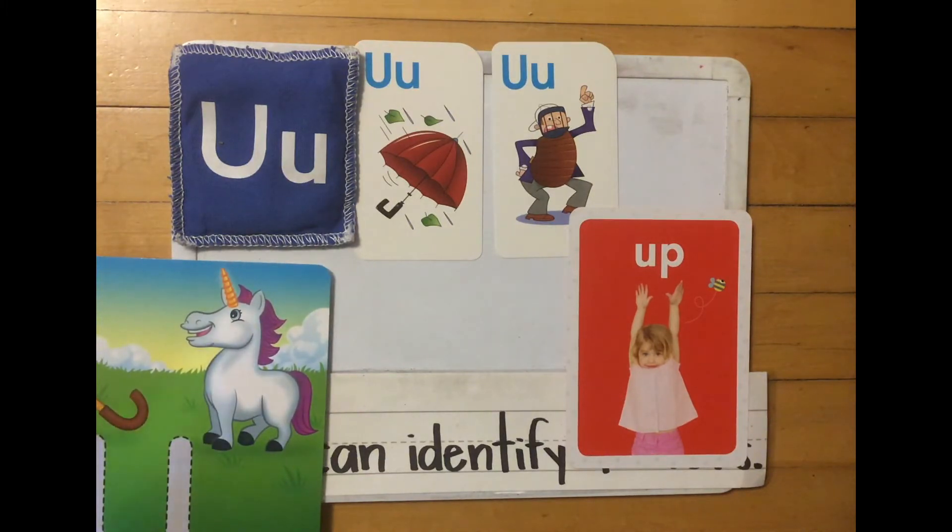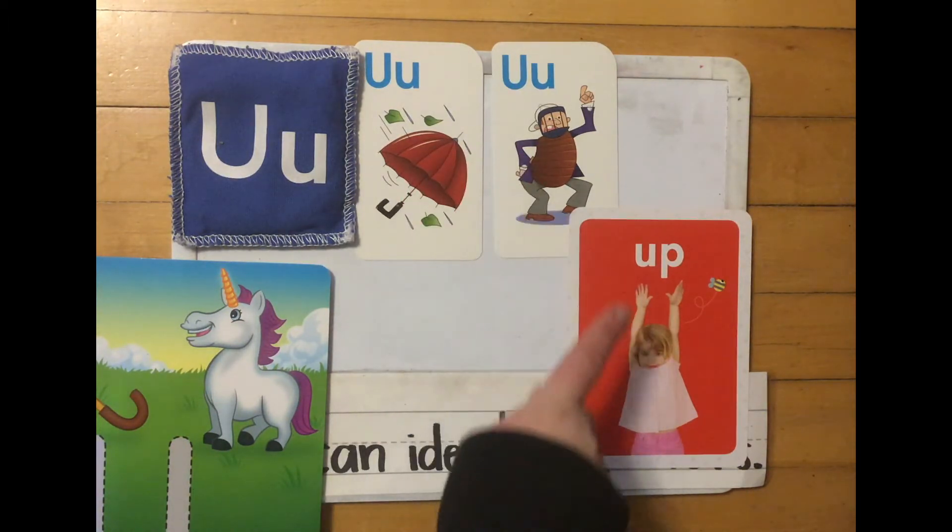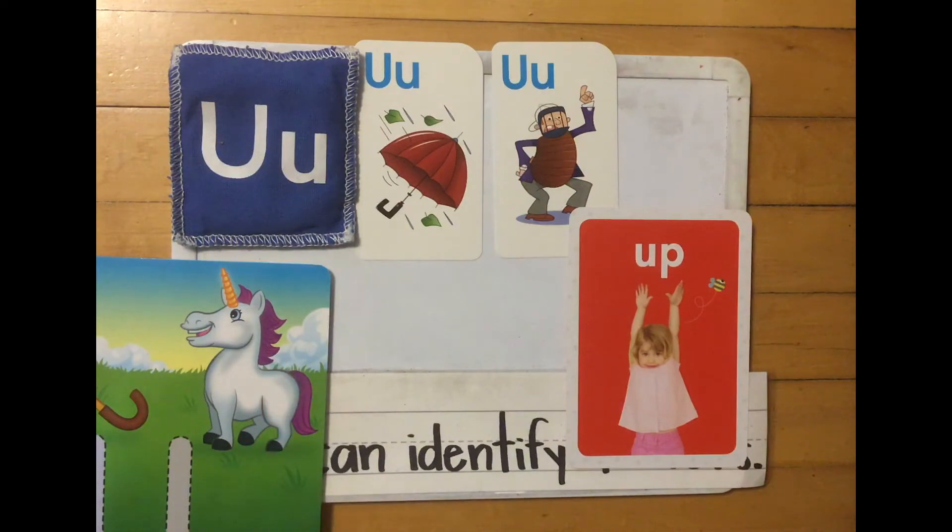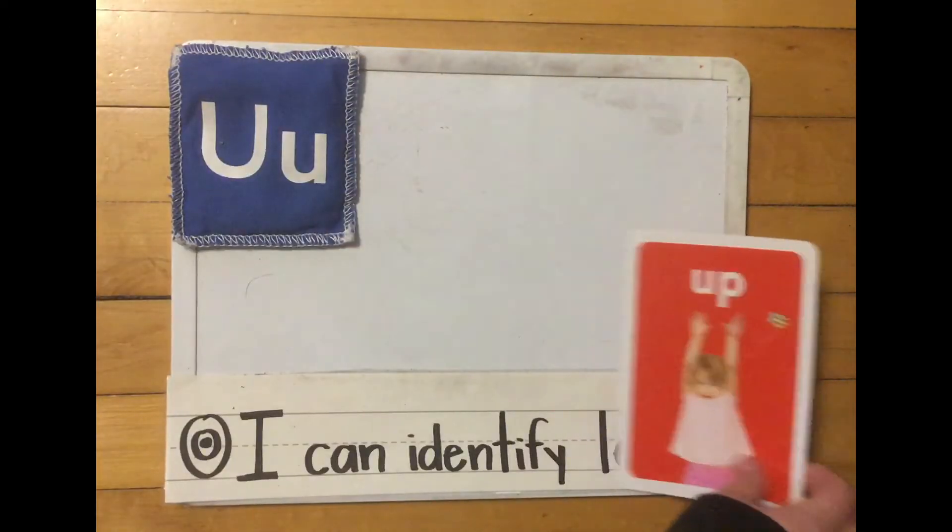Let's say these words together. Umbrella, umpire, up, unicorn. They all start with the letter U. Now let's practice writing the letter U.